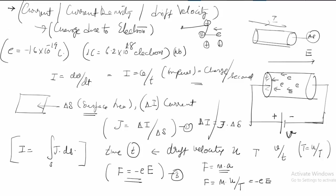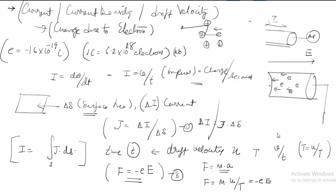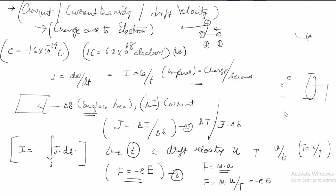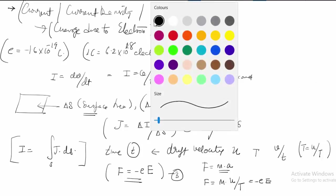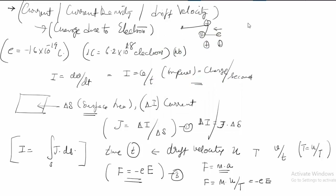From this it is possible to show that the drift velocity U is equal to minus e times T divided by the mass of the electron m, multiplied by the electric field E.